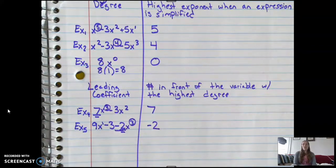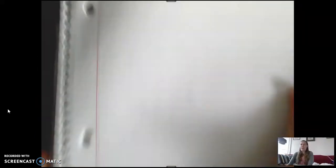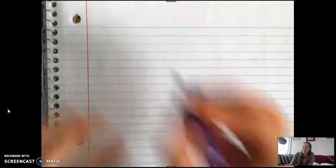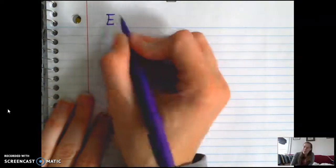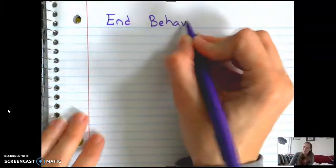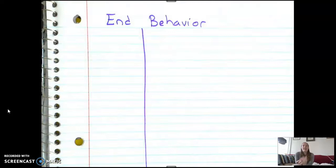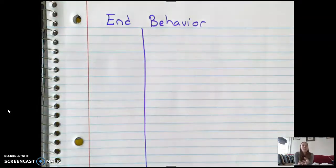So we're now going to do something with our degrees and our leading coefficient. I'm going to change my page so I can draw my thing very big. But what we're going to do with these is something called end behavior. And what end behavior is, is it's how the end of a polynomial graph behaves.